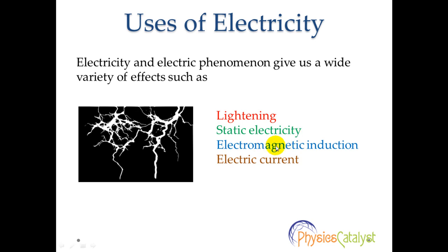Electromagnetic induction is the production of an electric current by changing the magnetic field enclosed by an electric circuit. The most common use of electromagnetic induction is in the electric generator.